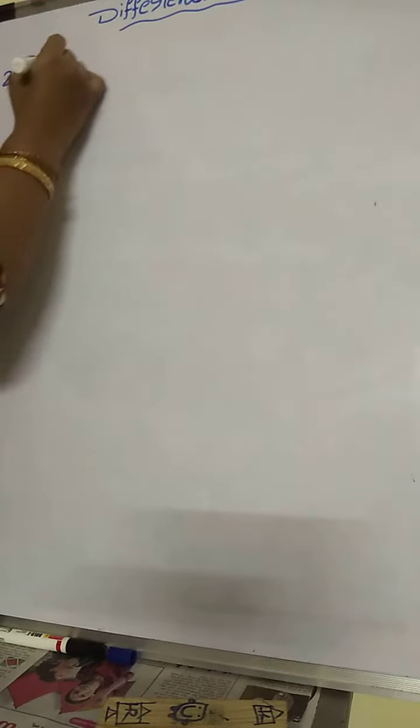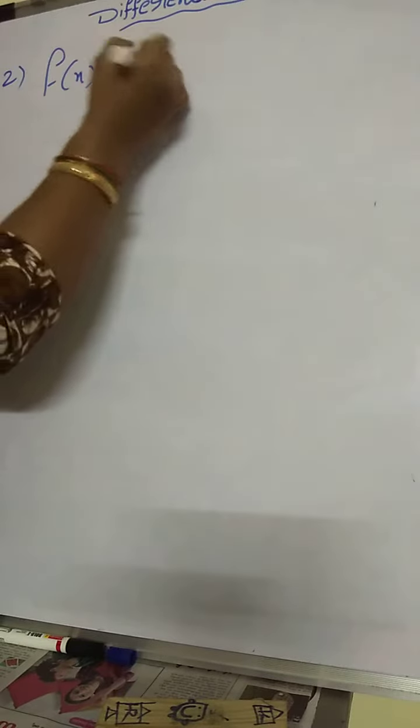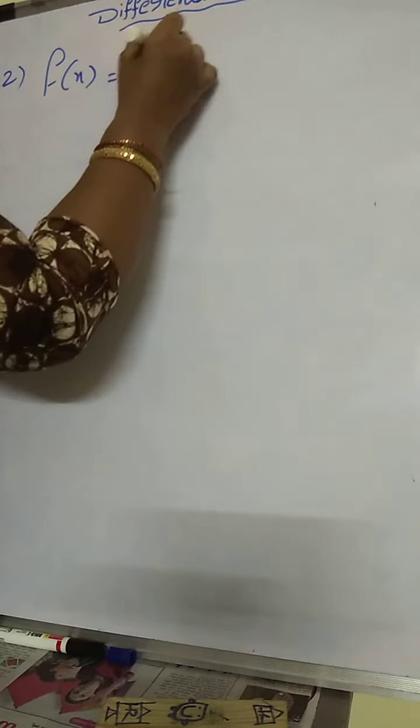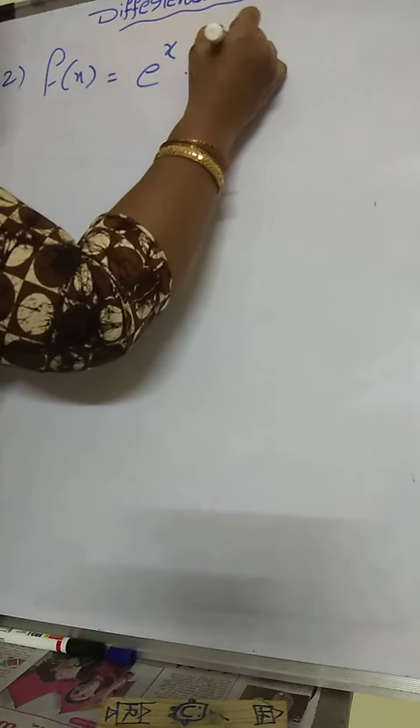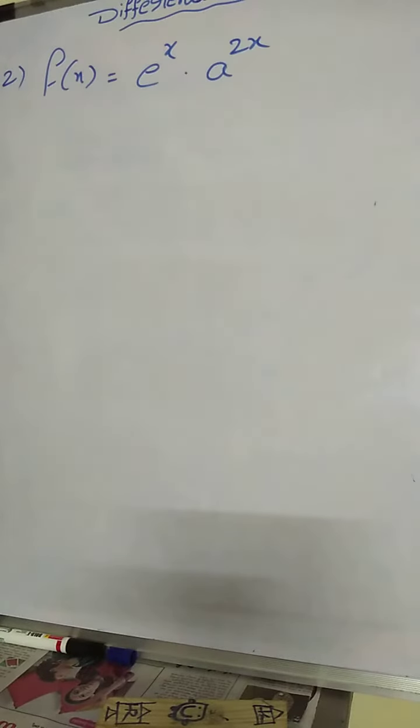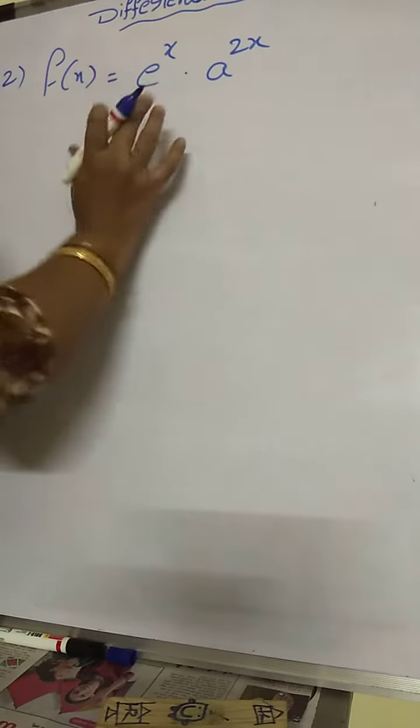This is the second formula. Suppose f of x equal to e power x into a power 2x. Suppose given taken like that.